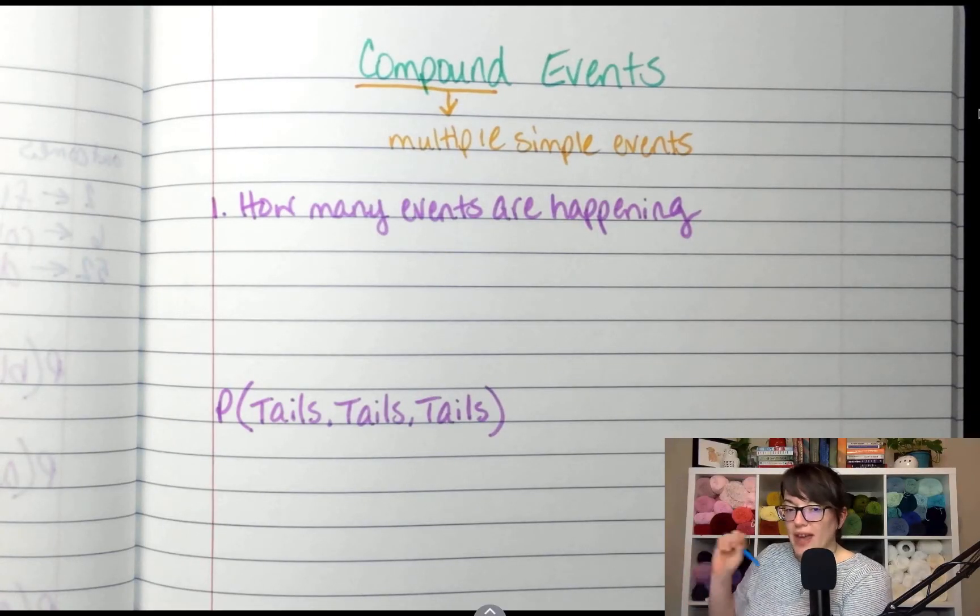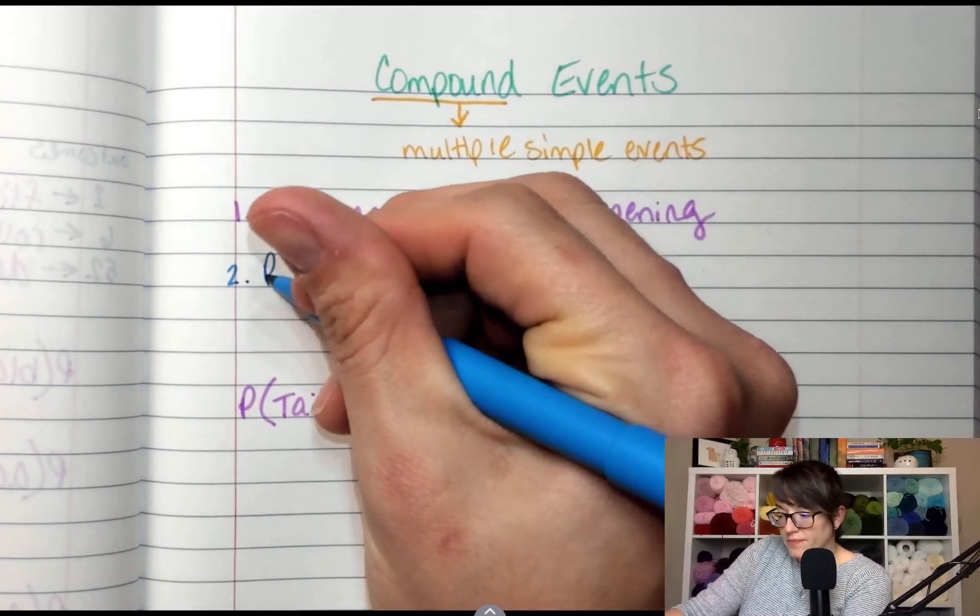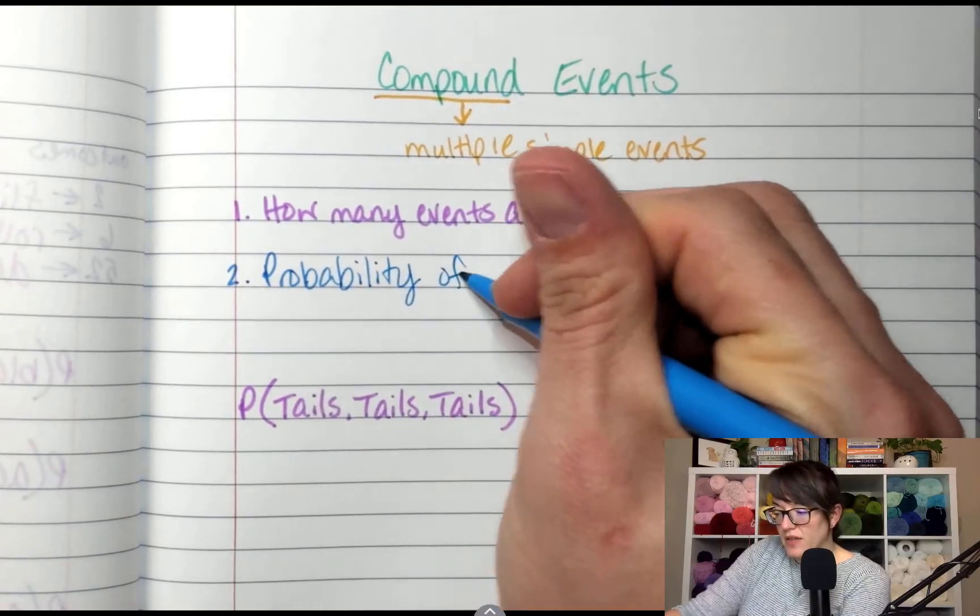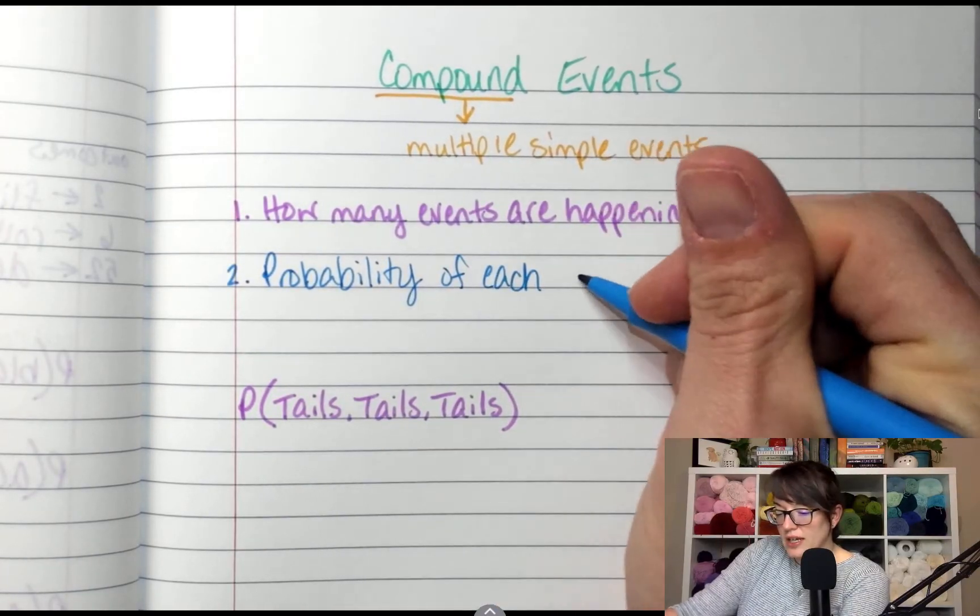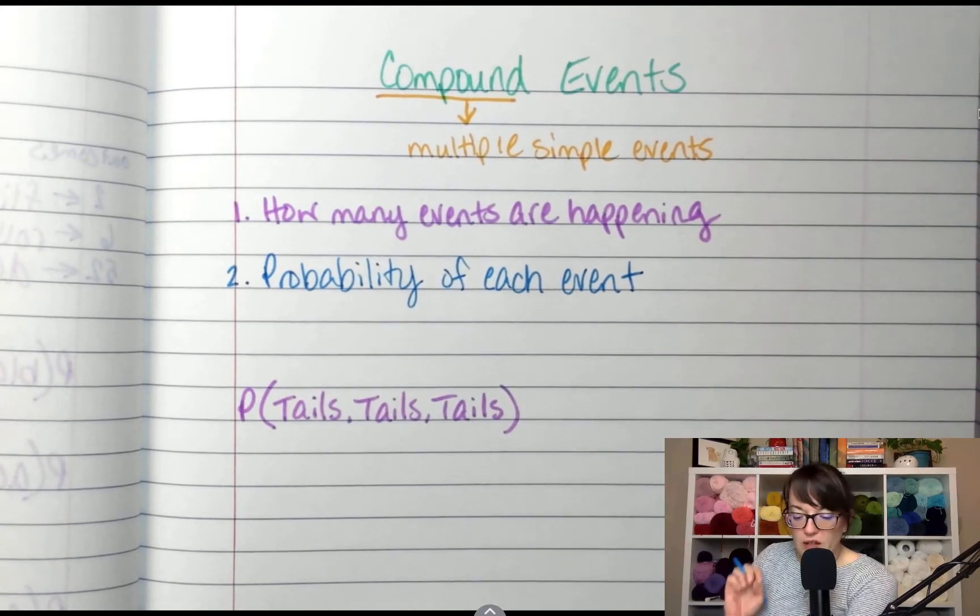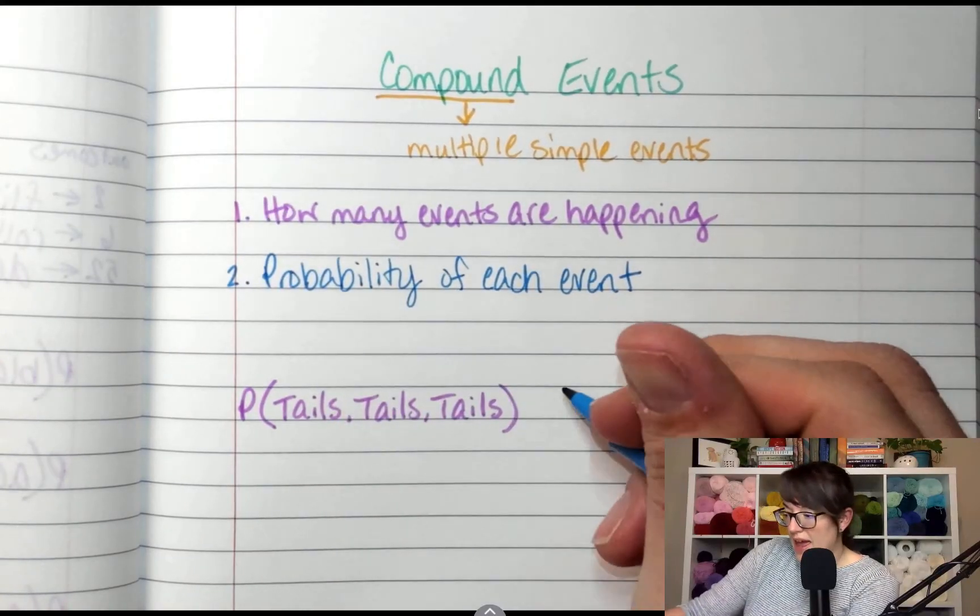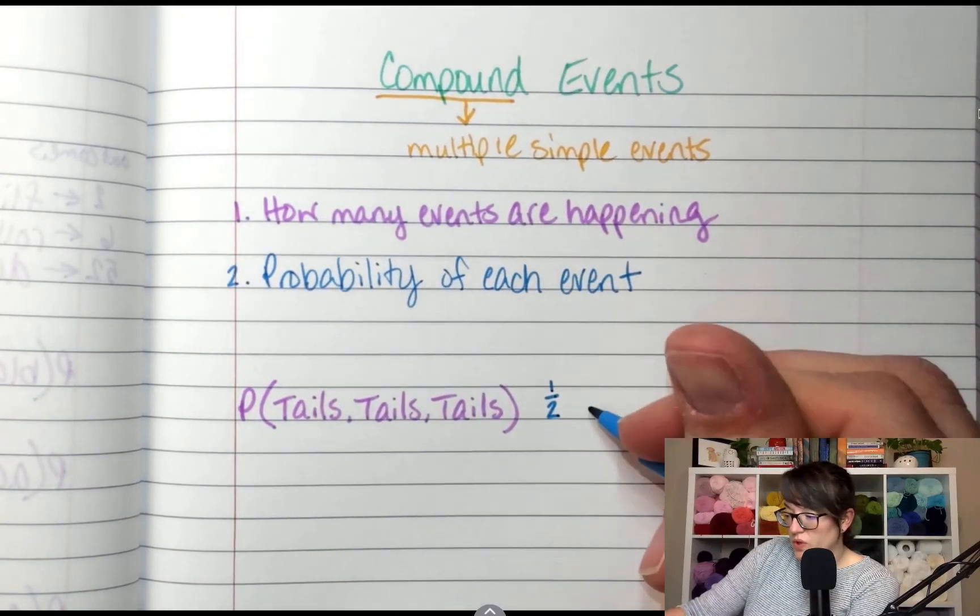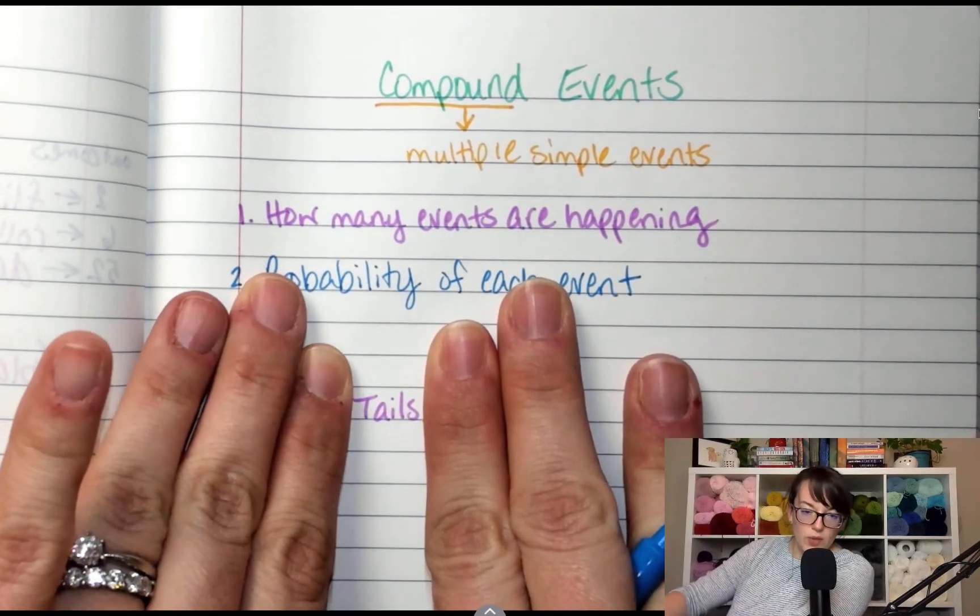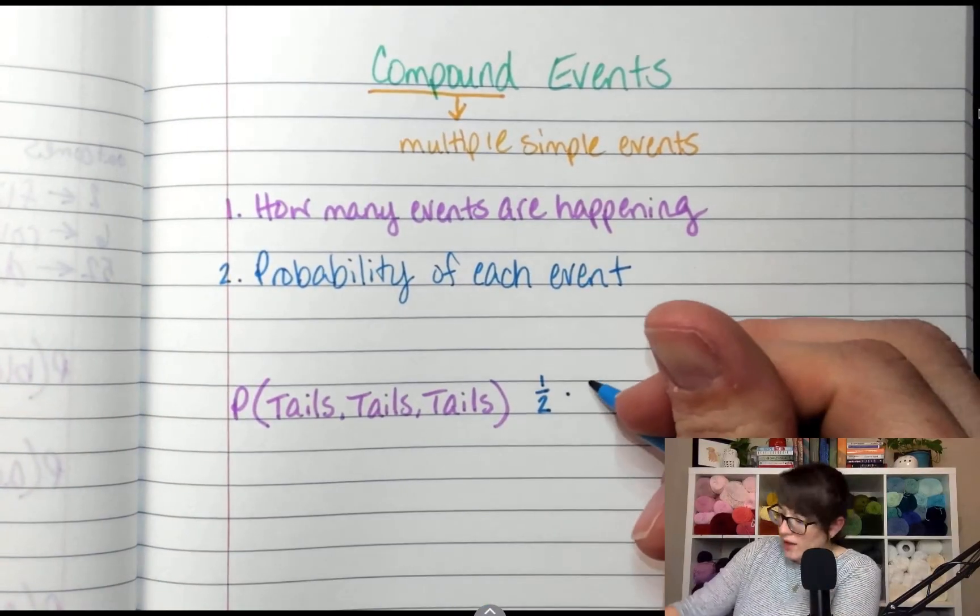So what is the probability that you will flip a coin and it will land on tails? One out of two. All right. Second event. What is the probability that you will flip a coin and it will land on tails? One over two.